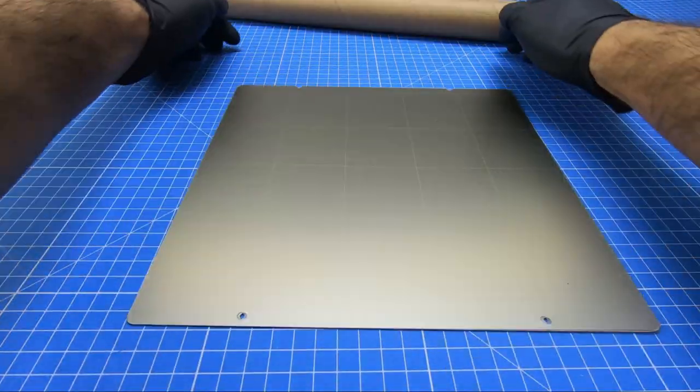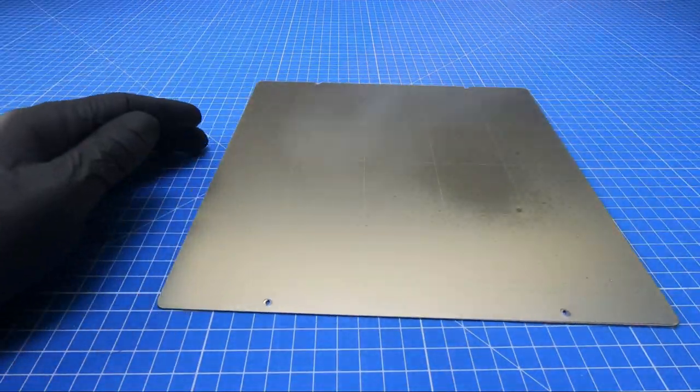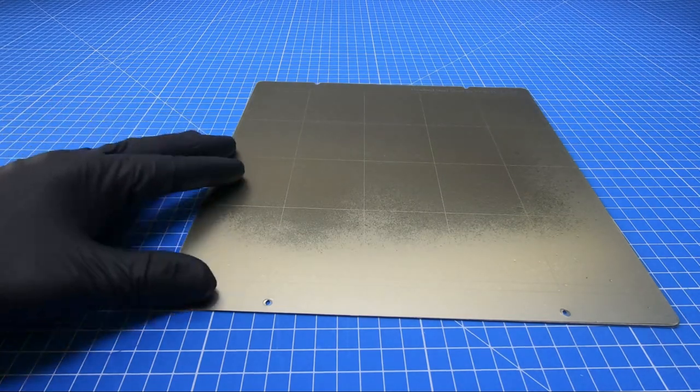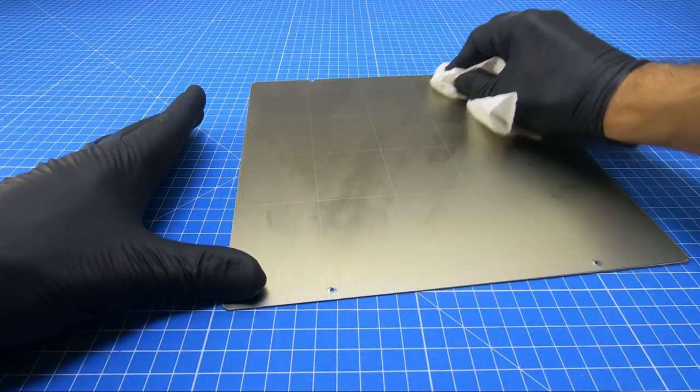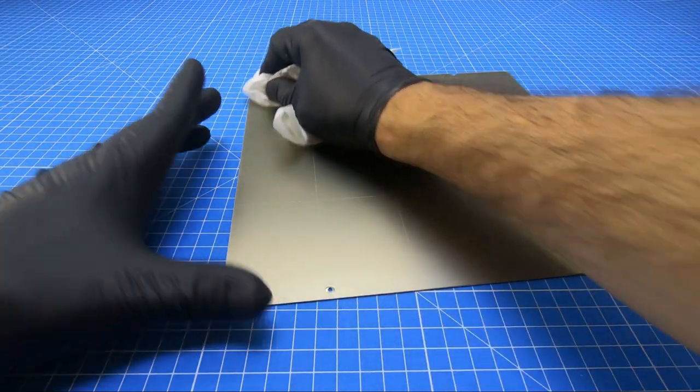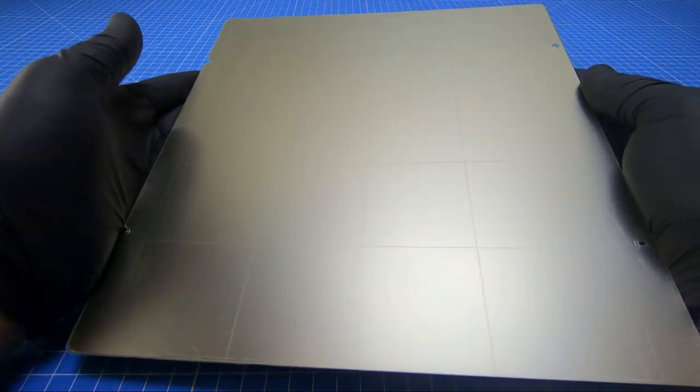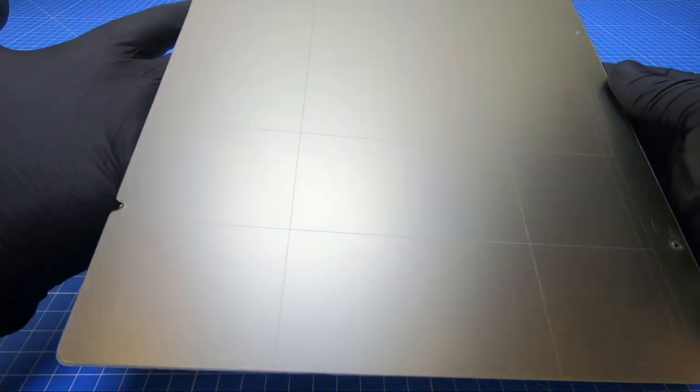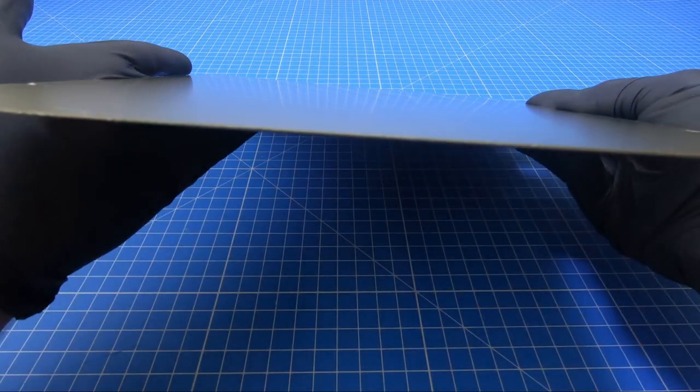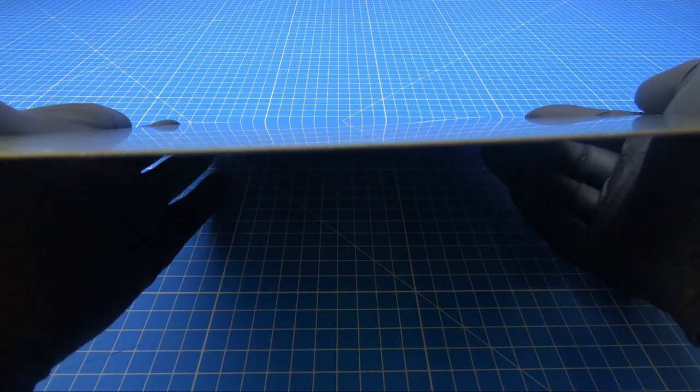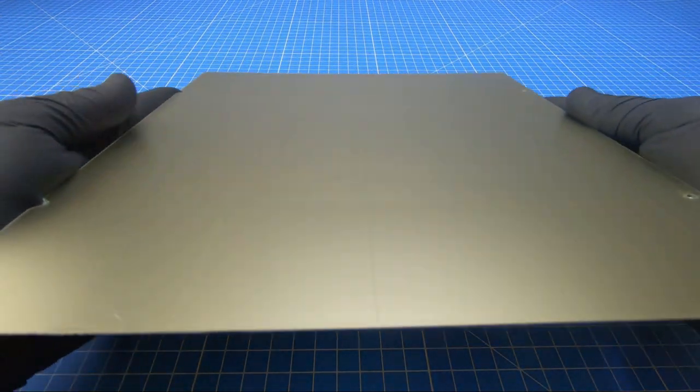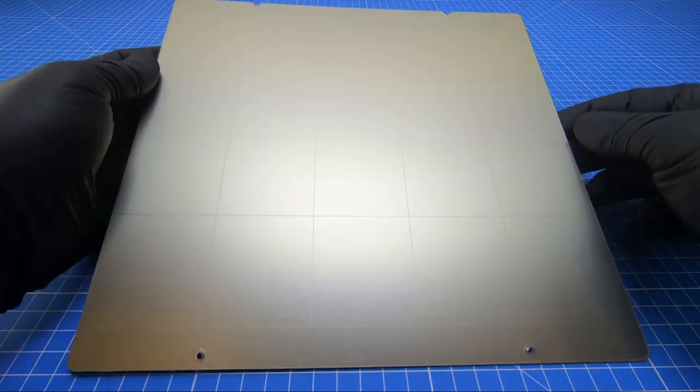After you squeeze the air out, do one final cleaning with isopropyl alcohol and you'll see that the result is perfect. The other side uses the same process, so just repeat it. Then swap your steel sheet with the PEI surface onto your 3D printer and start printing with perfect first layer adhesion.